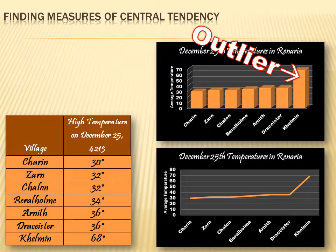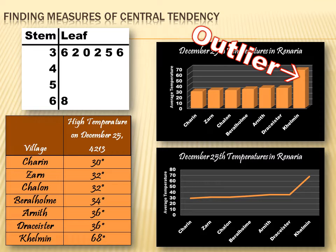A line graph also shows that the outlier is still there, making the line graph unpredictable. And on a stem and leaf chart, that outlier is again apparent — there's one value in the 60s: 68. But in the 30s, there are six values: 36, 32, 30, 32, 35, and 36. That outlier is messing things up.